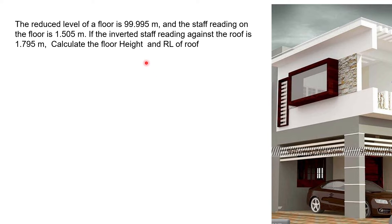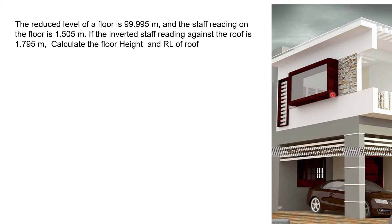If the inverted staff reading against the roof is 1.795 — of course this is the roof — when we are holding the staff in an inverted direction: normally, staff is held on the ground with zero at the bottom and readings increasing upward. But here we are holding the staff inverted, meaning zero is at the top and readings increase in the downward direction.